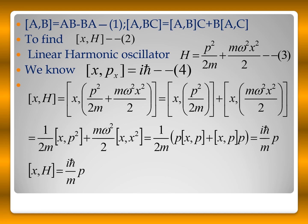So [x, H] is equal to [x, p squared by 2m plus m omega squared x squared by 2]. This can be written as the commutation relation [x, p squared by 2m] plus the commutation relation [x, m omega squared x squared by 2], which gives 1 by 2m times [x, p squared].